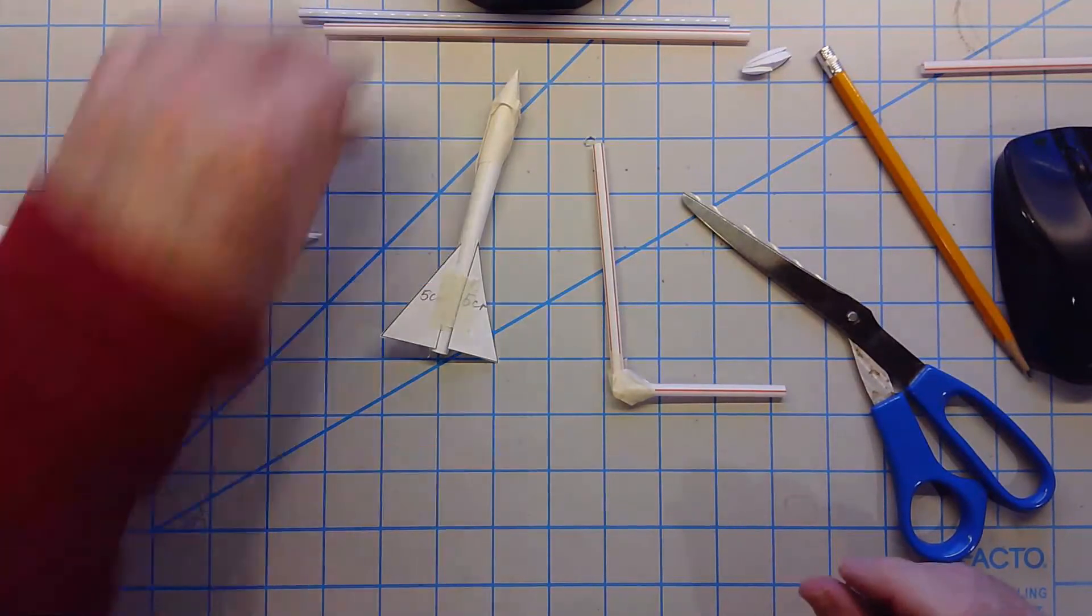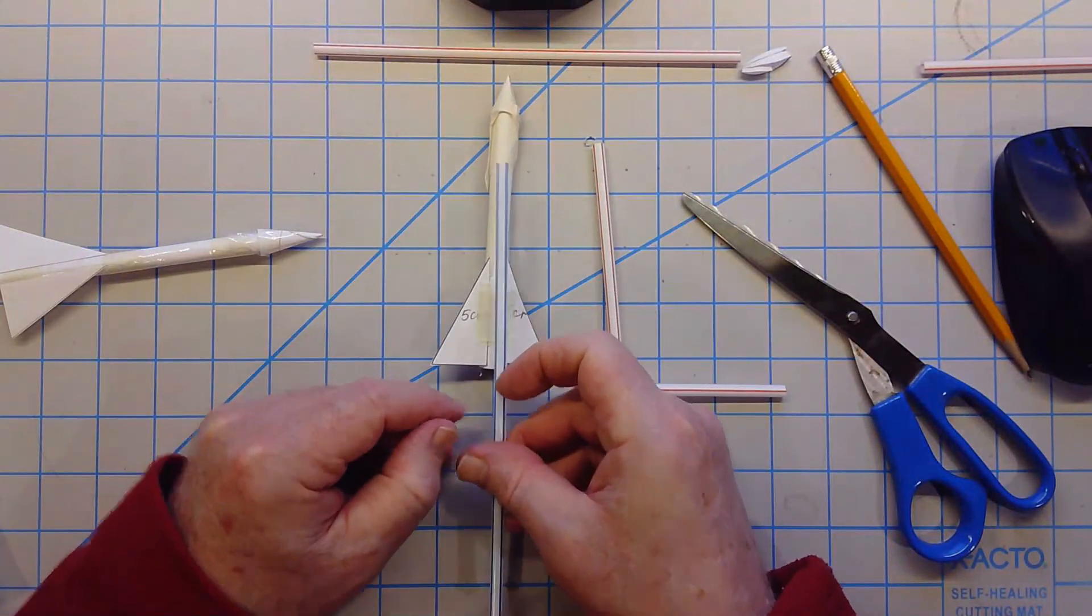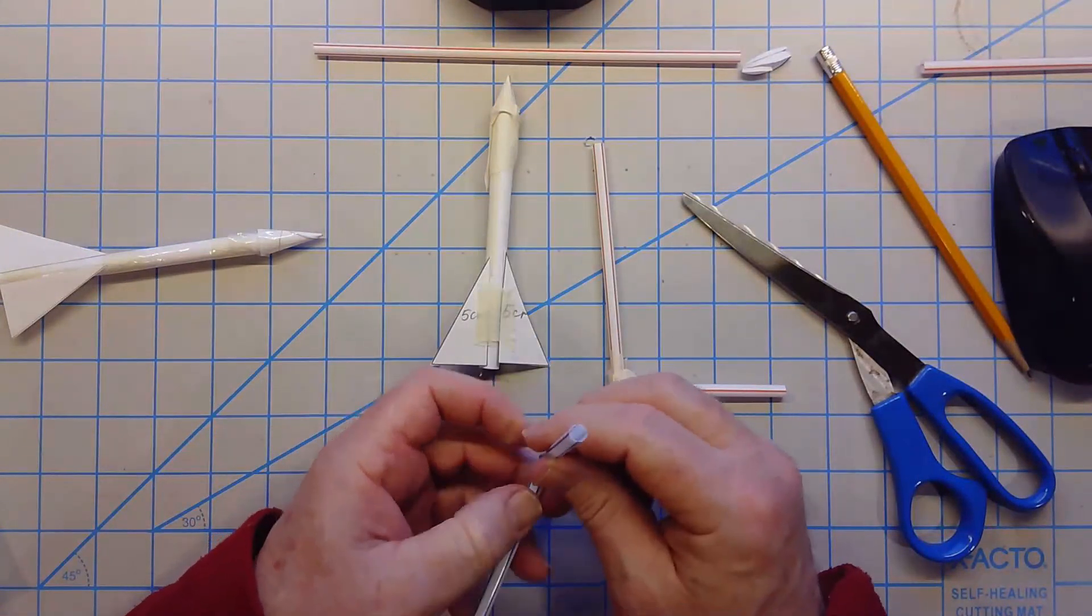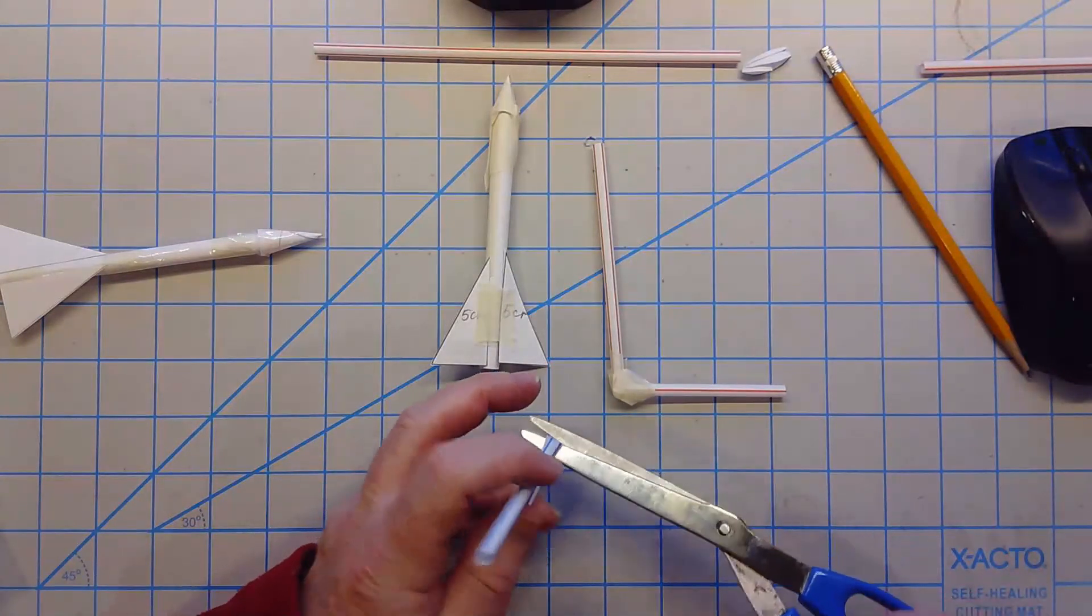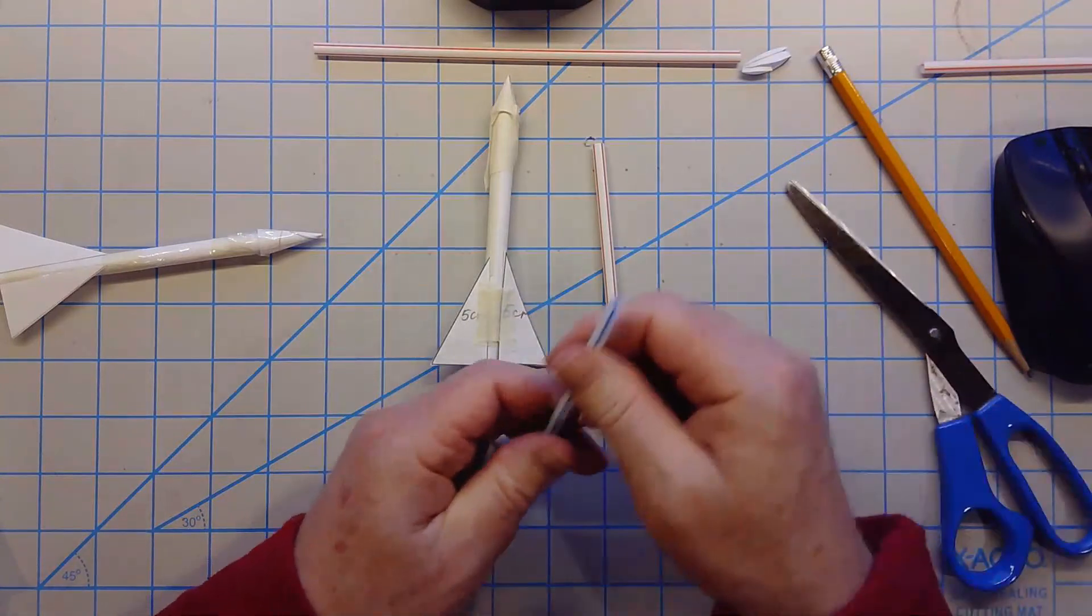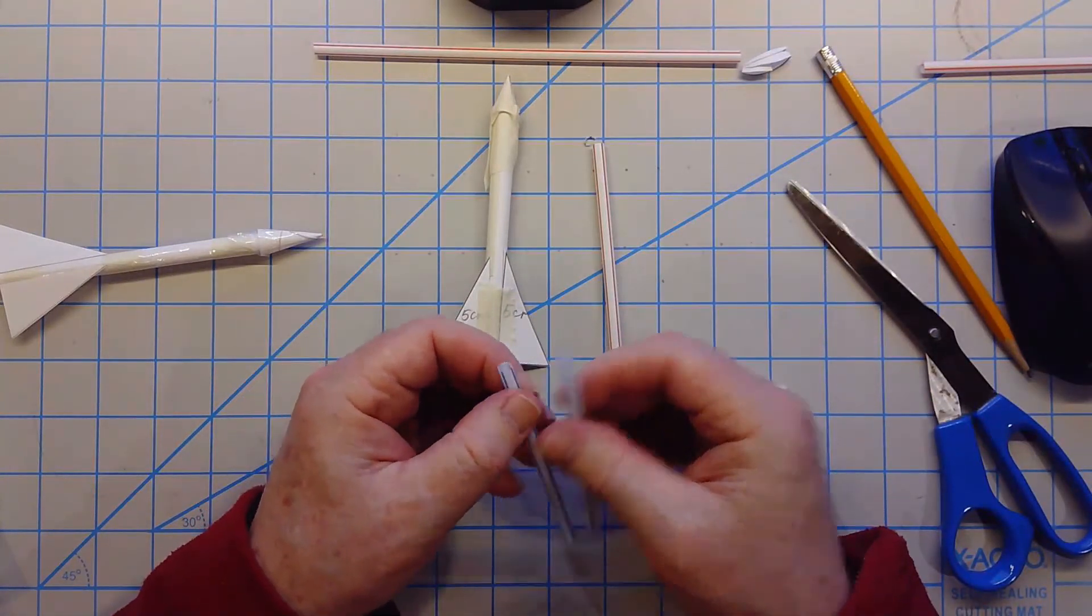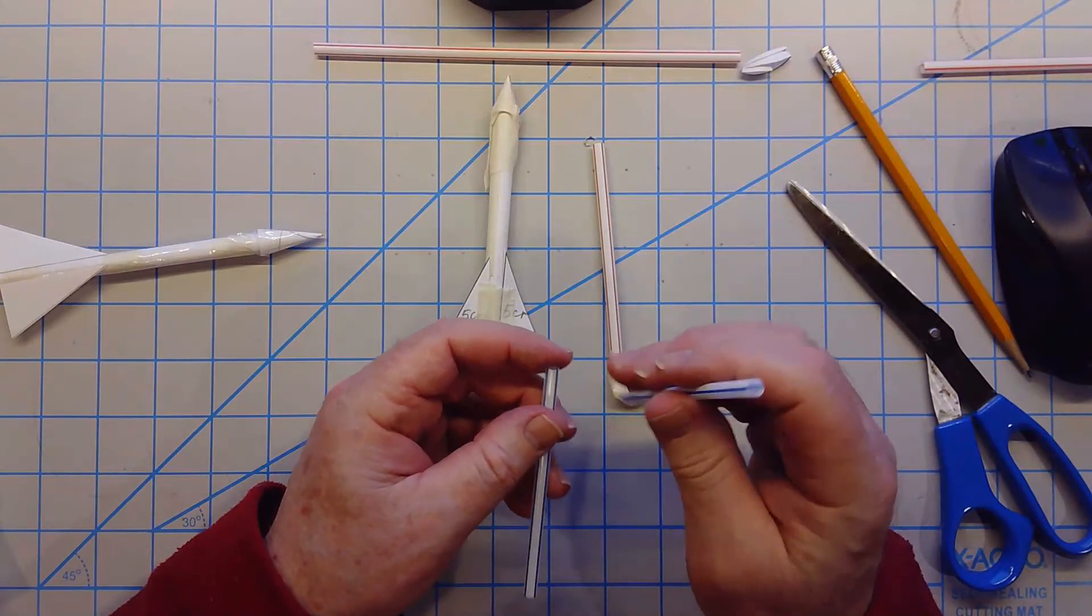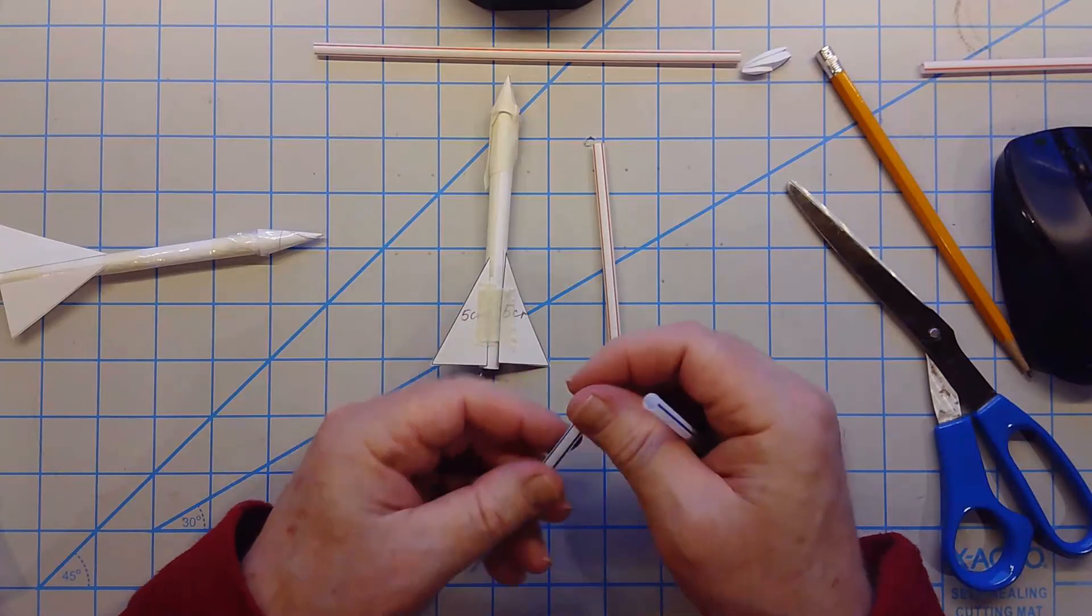Okay, and a straw. So I kind of want my straw to go about that far so I'll bend it, cut it. So now I have two pieces and actually they're about the same size.